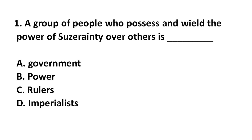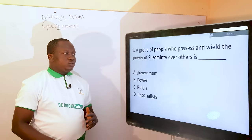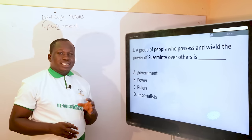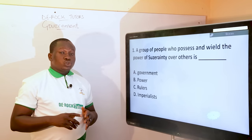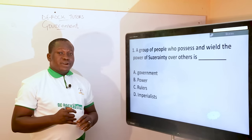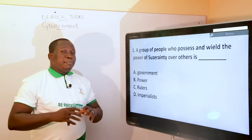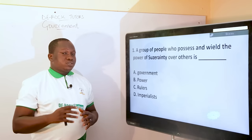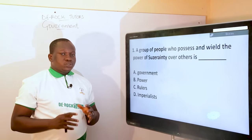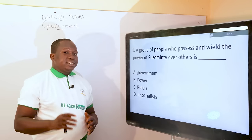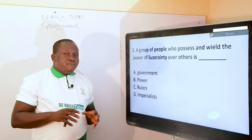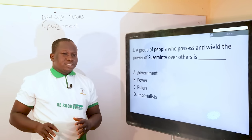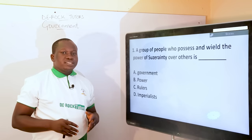The first question: a group of people who possess and wield the power of suzerainty over others. I don't want you to misconstrue suzerainty and sovereignty. In government, sovereignty refers to the ultimate, absolute, supreme, total, unrestrained, unregulated, and undivided power of a state to make and enforce laws without external control. Sovereignty applies to a political entity that has obtained independence. But suzerainty refers to the control of an external entity over another entity — just like Britain exerted suzerainty over Nigeria.